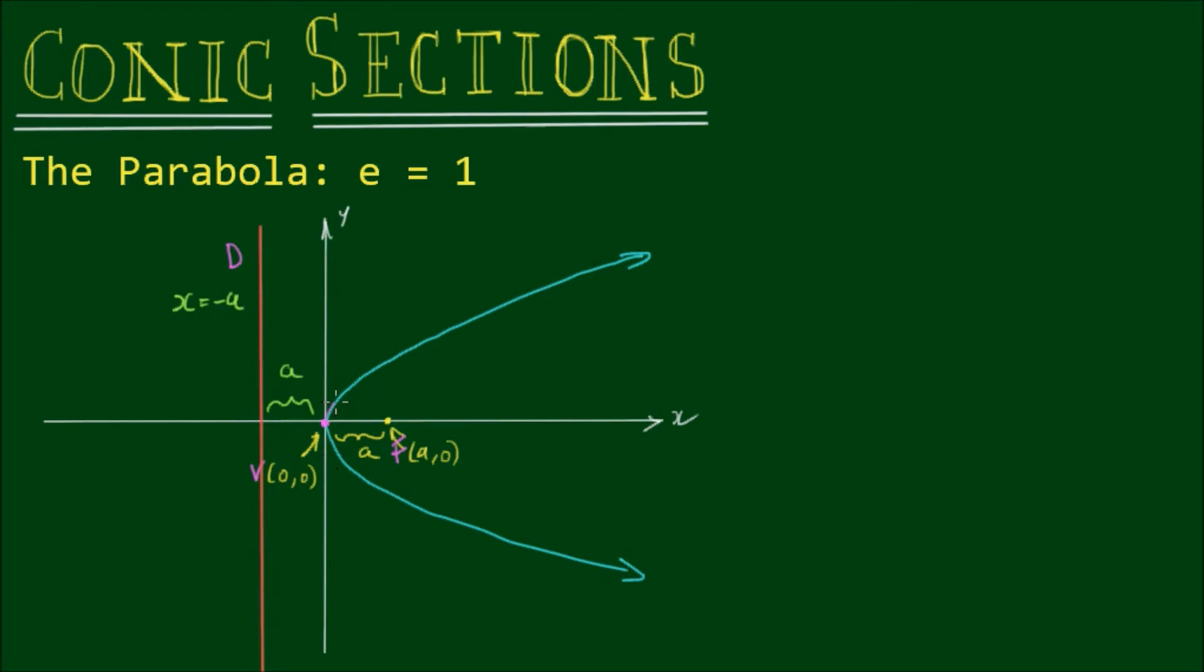Now the point P can only travel along the parabola. It can only travel along the locus. So if I choose an arbitrary point here, the point P, we know by definition that the distance between point P and the focus, so the distance PF, is equal to the perpendicular distance to the directrix, PD.